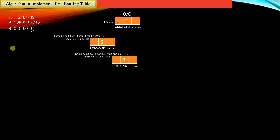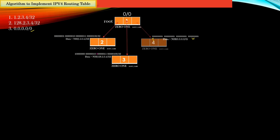Similarly, suppose you want to insert route number 3 which is the default route 0.0.0.0/0. The effective prefix representation of this route is nothing but all don't cares. The first bit of this effective prefix is a don't care, so it simply means that you need to insert a new child node as a don't care child of the root node. For node number 4, the effective prefix is as shown, the prefix length would be 32, and the data part will point to the next hop of this route. So far things are pretty much easy and simple.